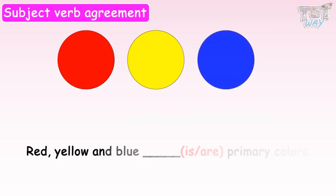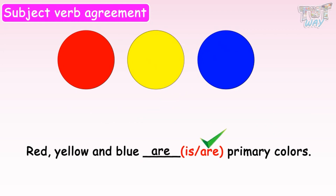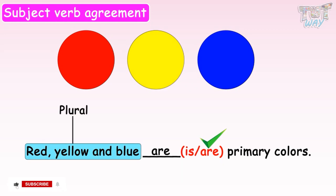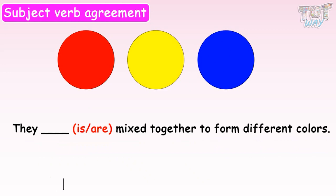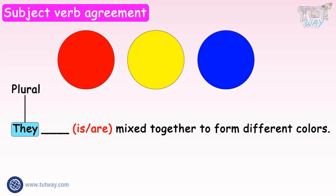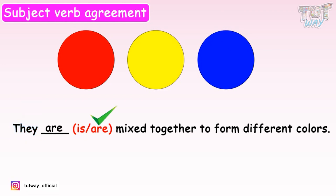Red, yellow and blue dash primary colors — is or are? It should be are, because we are using the plural subject red, yellow and blue. Red, yellow and blue are primary colors. They dash mix together to form different colors — is or are? They is a plural pronoun, so we will use are. They are mixed together to form different colors.